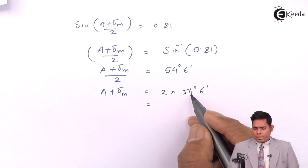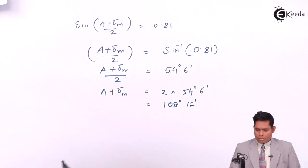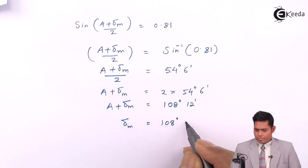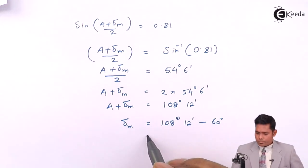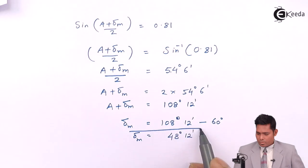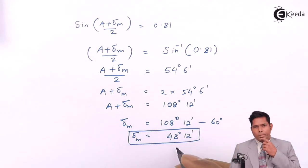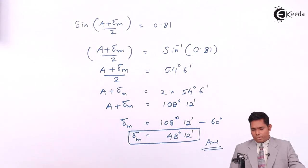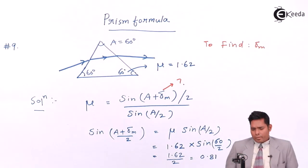So A plus delta m equals 108 degrees and 12 minutes. Since A is 60 degrees for an equilateral prism, delta m equals 108 degrees 12 minutes minus 60 degrees, which leaves 48 degrees and 12 minutes. The angle of minimum deviation is therefore 48 degrees and 12 minutes — that is the answer.